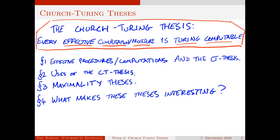This is exactly the topic for this week. I'll be looking at the Church-Turing thesis — stated more precisely in a little bit — which is the idea that every effective computational procedure is Turing-computable, or equivalently recursive. Church was more interested in recursive functions before it was realized that they were equivalent to Turing-computable functions. Here's what we'll discuss this week: first, we'll start with a discussion of effective procedures and computations and how this figures into the Church-Turing thesis.